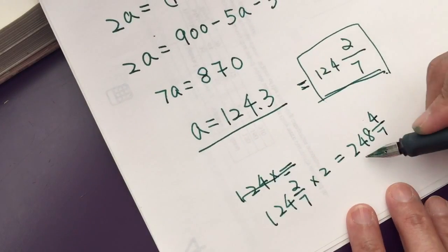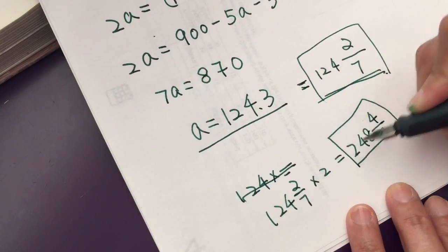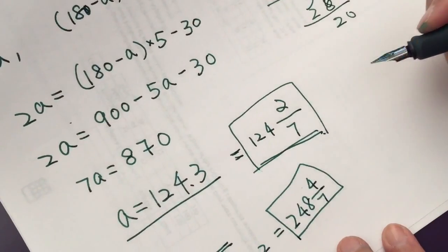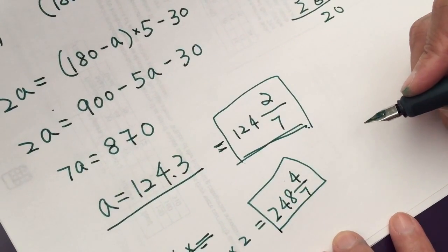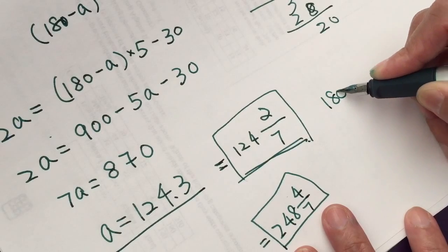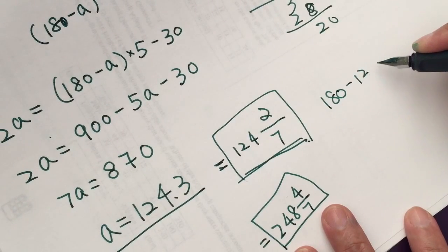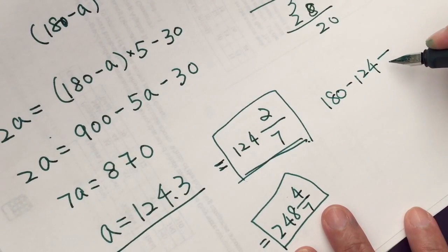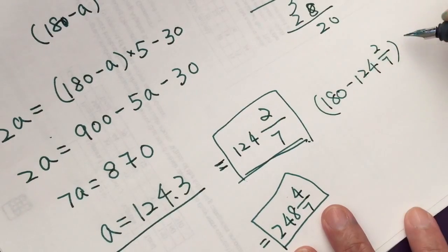Yeah, so this is twice that angle, and we need to calculate 5 times of that angle, 180 minus 124 and 2/7 times 5 minus 30.